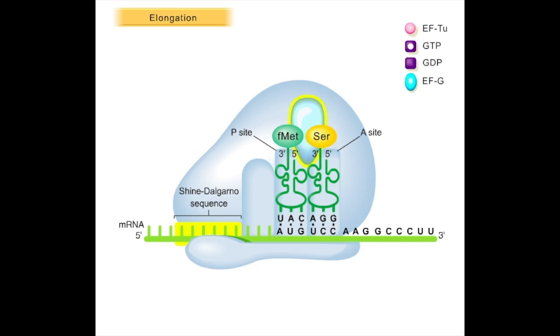This reaction is catalyzed by peptidyl transferase residing in the large ribosomal subunit. The first step involves breaking the bond between FMET and its tRNA in the P site. Next, a peptide bond forms between the now freed FMET and the serine which is attached to its tRNA in the A site.